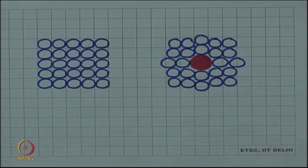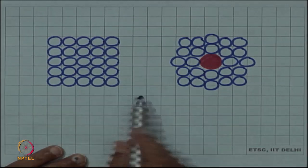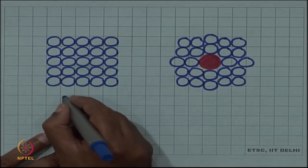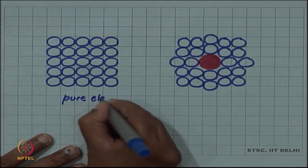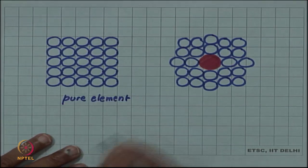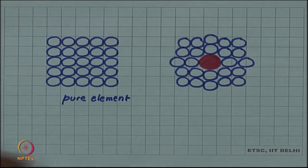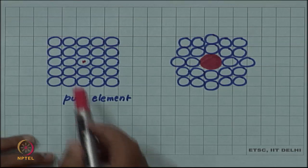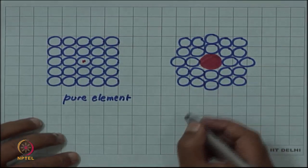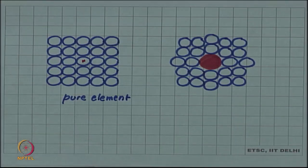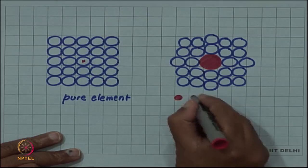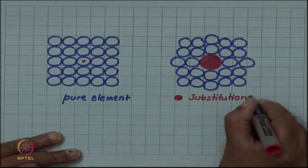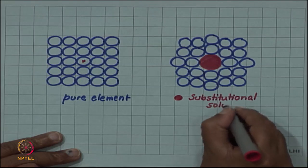Let us look at why this is so. Let us look at this schematic of a solid solution. We have a pure element where all atoms are equally sized, and suppose we now substitute the central atom by a larger atom. This is a substitutional solute — the red element here is the substitutional solute.